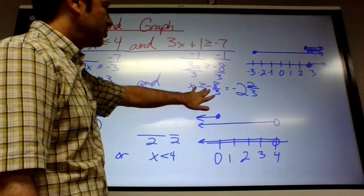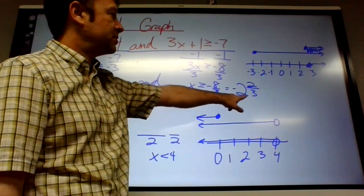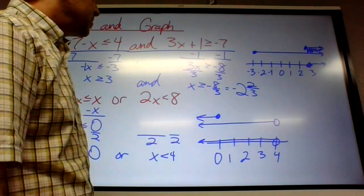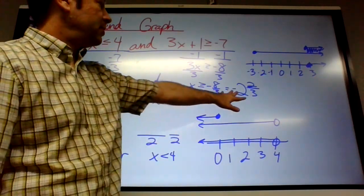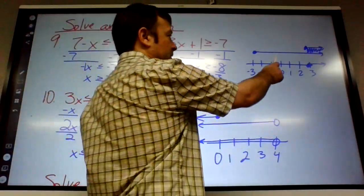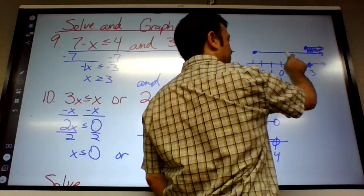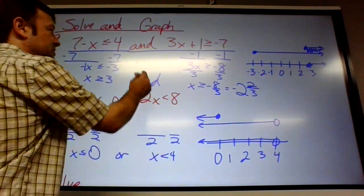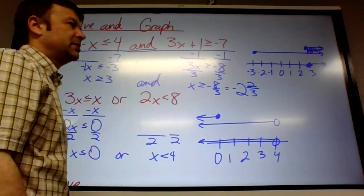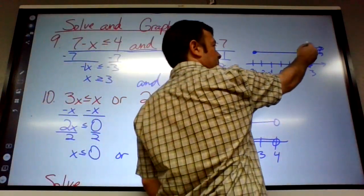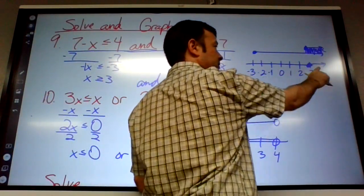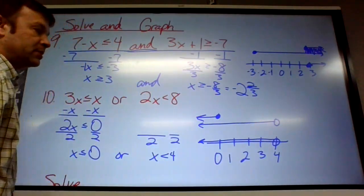This one's pretty normal. Negative 8 thirds is also negative 2 and 2 thirds. So I got X is greater than or equal to 3 or greater than or equal to negative 2 and 2 thirds. So I did the floating lines above the graph. And because it's an and statement, you only use what they have in common. So where they're both at. That would be everything 3 and beyond. So the final answer, X is greater than or equal to 3.